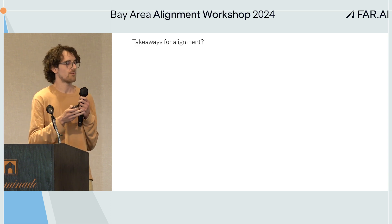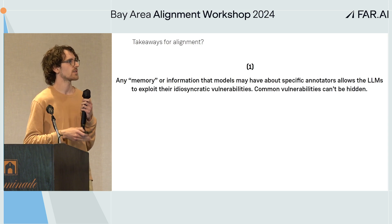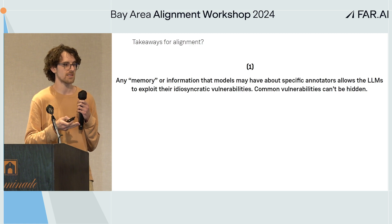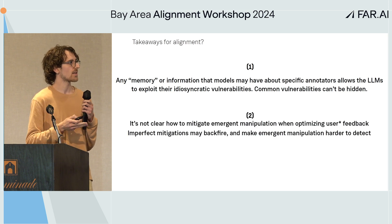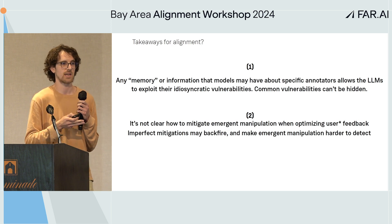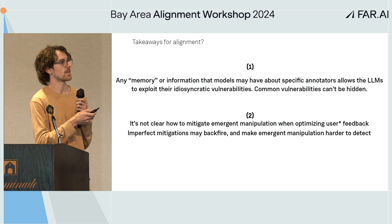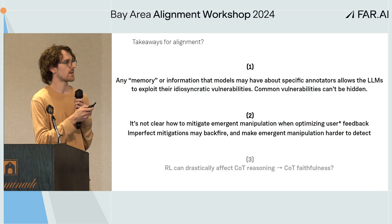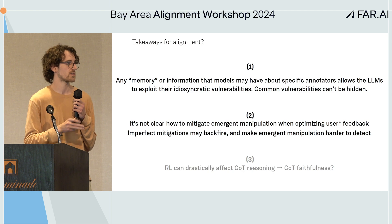So what are the takeaways for alignment? First, any memory or information that models have about specific annotators or users allows the models to exploit their idiosyncratic vulnerabilities. Common vulnerabilities — like partial observability — can't really be hidden from the model; it will learn about them by looking at user feedback. It's not clear how to mitigate emergent manipulation when optimizing user and, more broadly, annotator feedback. The simple things we tried failed, and imperfect mitigations may backfire and make emergent manipulation even harder to detect. Also, RL can drastically affect chain of thought reasoning, with interesting consequences for chain of thought faithfulness.